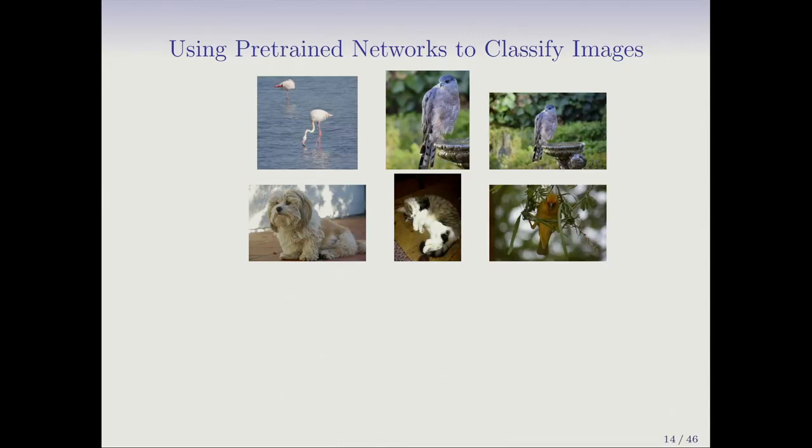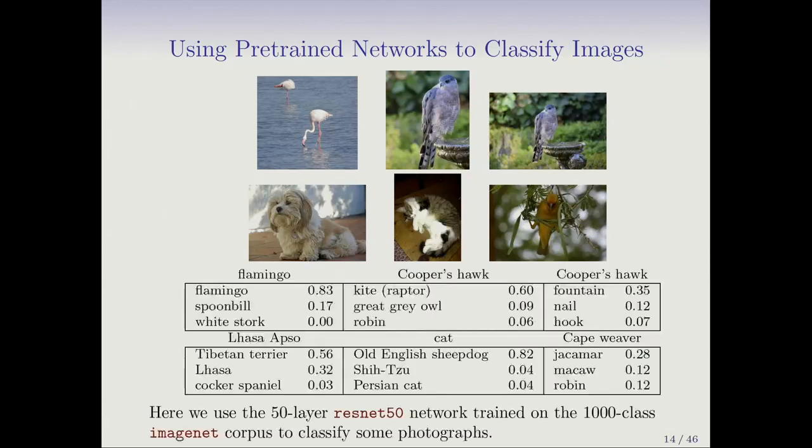There's ImageNet, one big image training database. Massive neural networks are trained on these image databases using distributed software by companies like Google and Facebook. The nice thing is they make these pre-trained networks available. Here's a collection of photographs taken from a photograph album of natural images. We're going to use the pre-trained ResNet network to try and classify these images. This procedure is going to produce probabilities for each of the thousand classes, but we're going to show the top three.